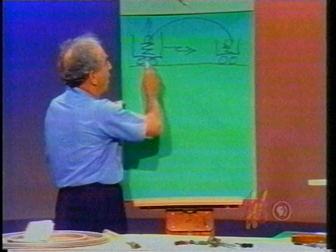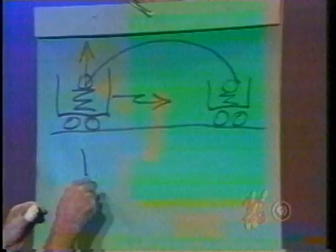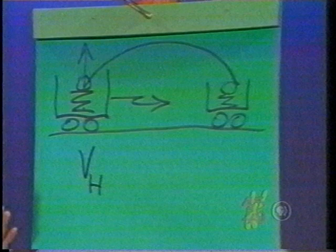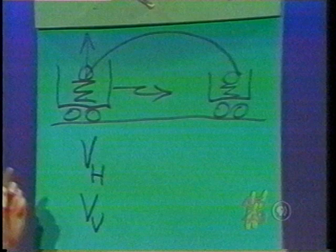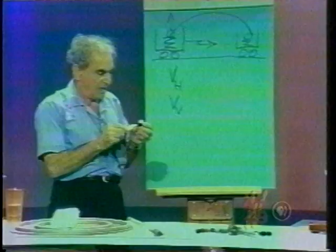This suggests a very important piece of physics: the horizontal motion of the car — which we refer to as V horizontal, the horizontal velocity — is independent of the vertical velocity. Each goes its own way without interference by the other.